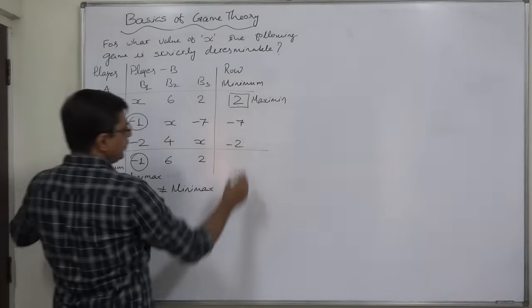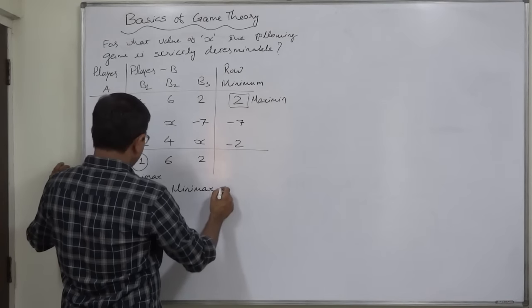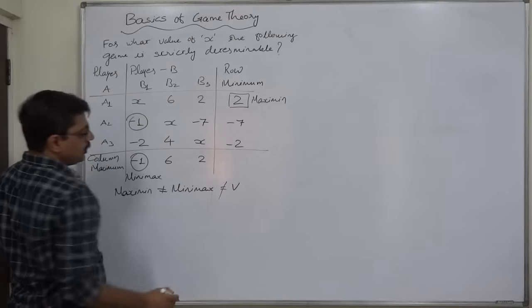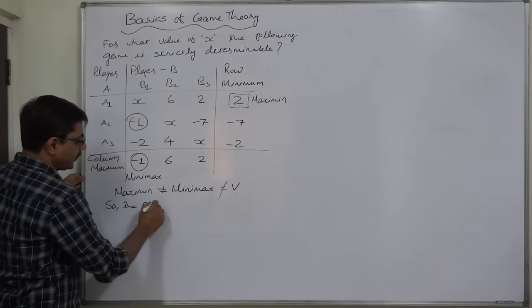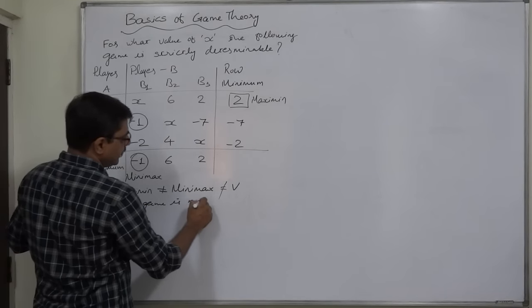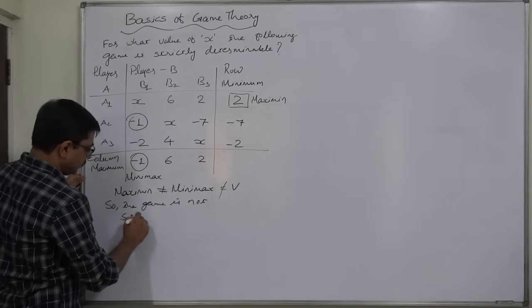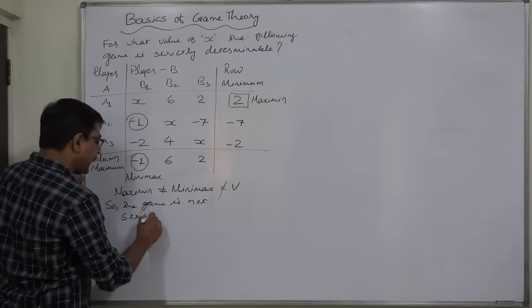And under such situation, we have to take maximin as the value of game. So all the three are not equal. So the game at present is not strictly determinable. This is the situation at present.